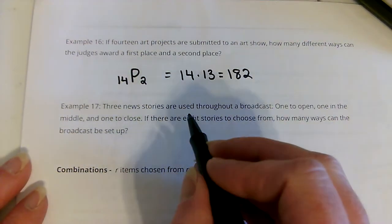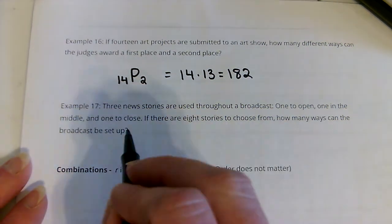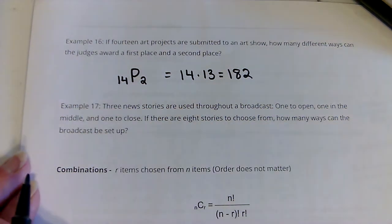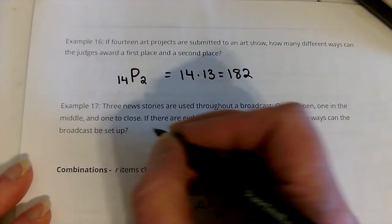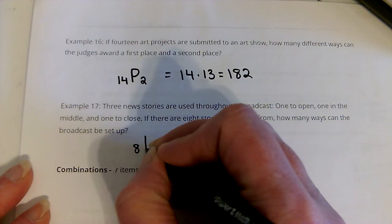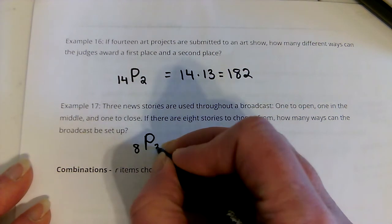Three new stories are used throughout a broadcast. One to open, one in the middle, and one to close. If there are 8 stories to choose from, and note that the order will matter here, how many ways can the broadcast be set up? So, we've got 8 stories, and we're picking 3.